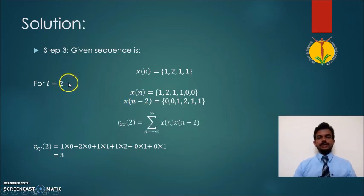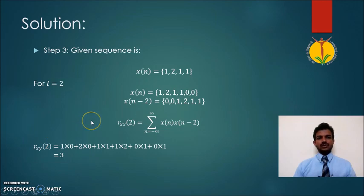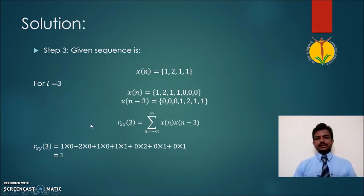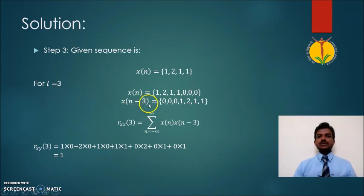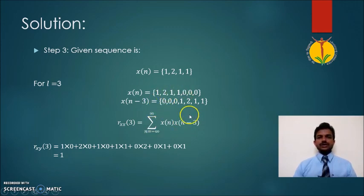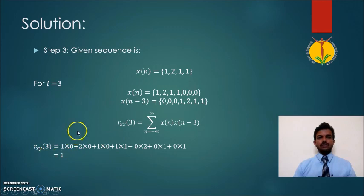In the third step, applying L = 2 and following the same procedure, we get the next value R_xx(2). In the next step, applying L = 3, one important point is that the signal x(n) must be shifted to the right by three samples. After performing the multiplication and addition of x(n) and x(n−3), we obtain the value R_xx(3).